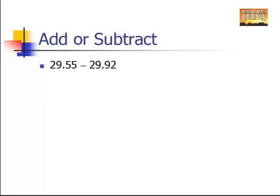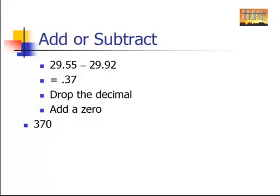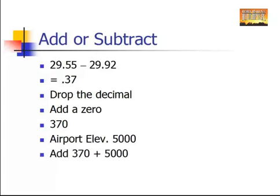Let's start with a lower than standard pressure. Standard pressure is 29.92. Let's say your barometric pressure that day is 29.55. You're going to subtract that from standard and that gives you .37. After you get that, you're going to drop the decimal, add a zero, and that gives you 370. Now I just made up an airport elevation of 5,000 feet for where you're working your problem. You're going to add the 370 to the 5,000 and give you a pressure altitude of 5,370. Now again, this is because the pressure is lower than standard. You add to airport elevation, and it seems kind of backwards possibly, but this is the way you work the problem.